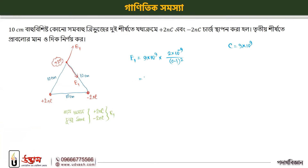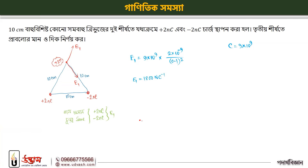If you look at this, this is 8 Newton per Coulomb. This is u1. If you look at this, you do not know u1. This is u1. This is 60 degrees. This is how u1 is 120 degrees.